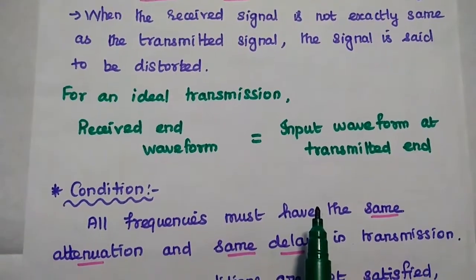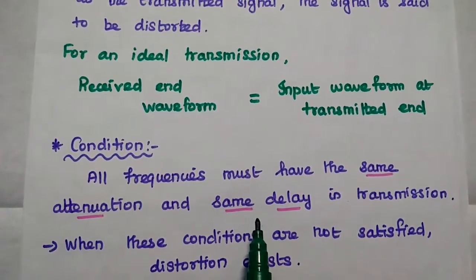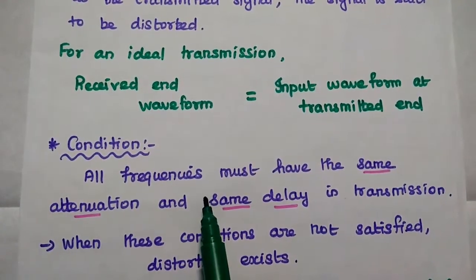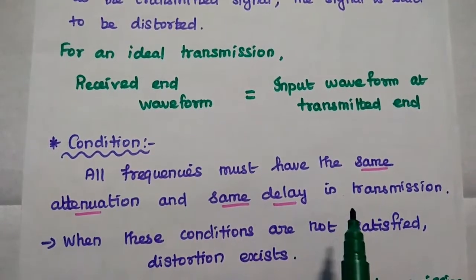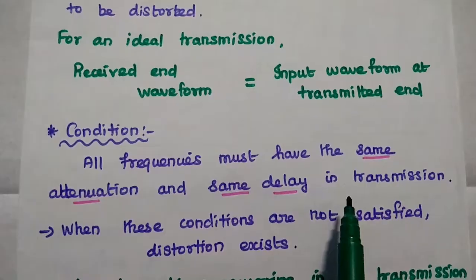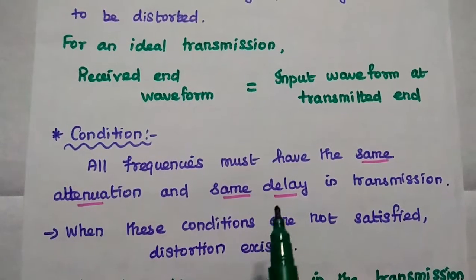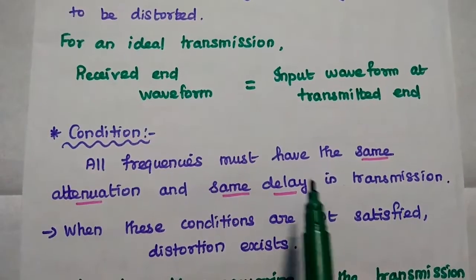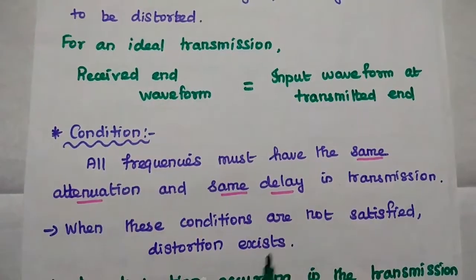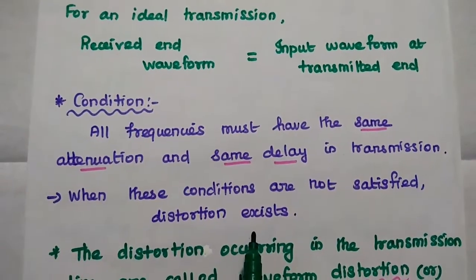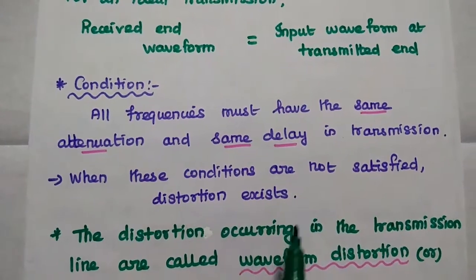For getting this ideal performance, we need to satisfy one condition: all frequencies must have the same attenuation and same delay in transmission. Because we are going to transmit a signal which has many frequency components, those frequencies must have the same attenuation and same delay. When these conditions are not satisfied, distortion exists.